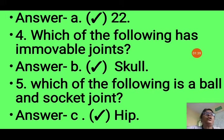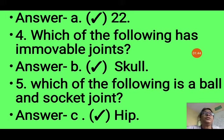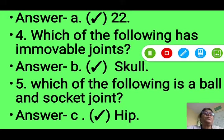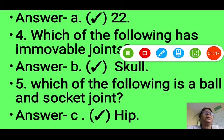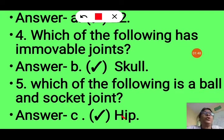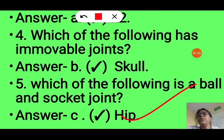Fifth question: Which of the following is a ball and socket joint? Options are ankle, hip, knee, and wrist. We know that the hip has the ball and socket joint, so the answer is option B — hip.